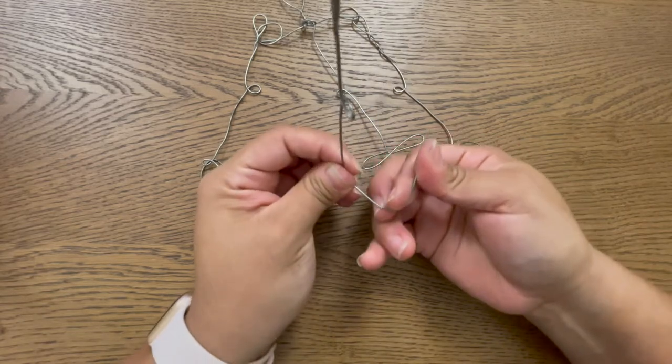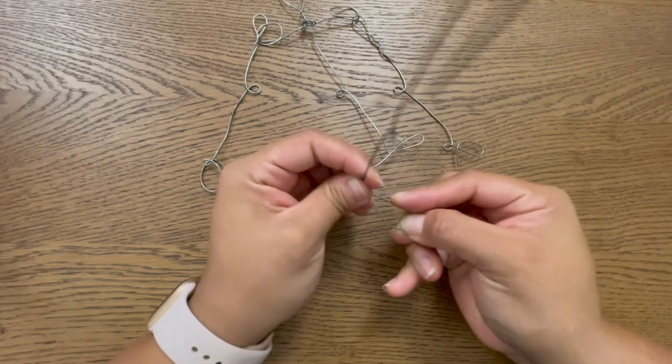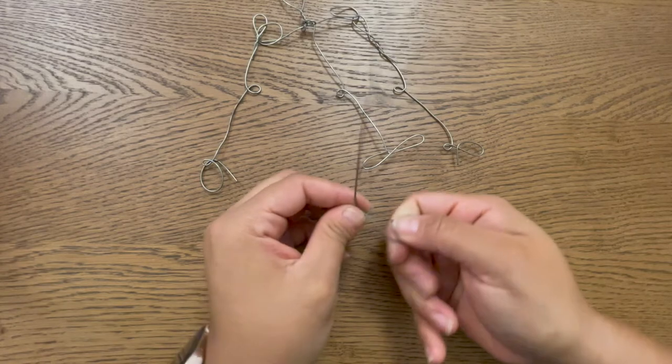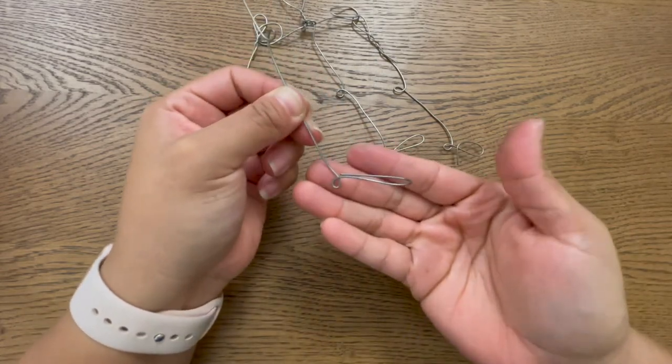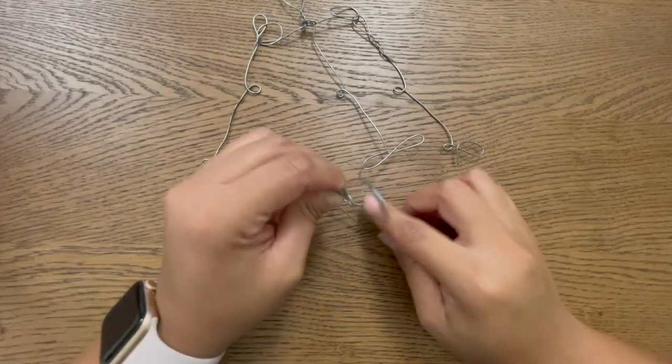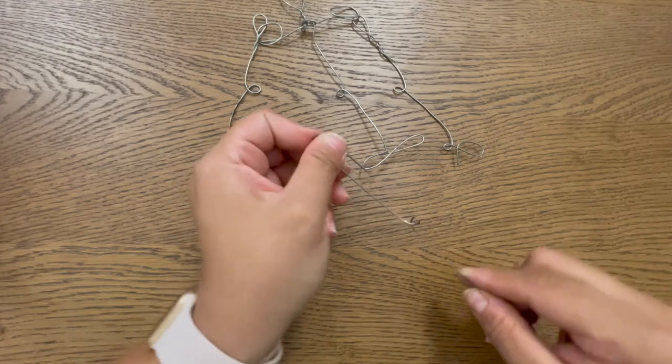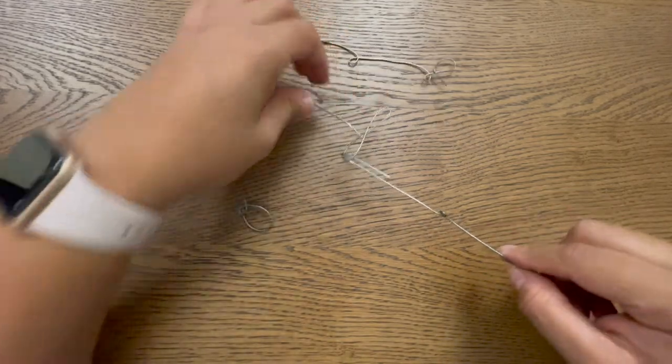We're going to bend it to a teardrop shape, and that's going to become our foot. It's going to be the back of our foot right here, the front of our foot, so it's going to be able to step down like that. That can be hooked on to here.